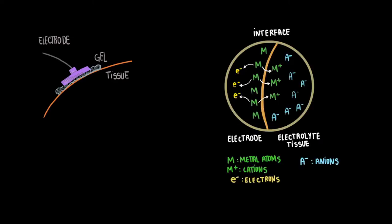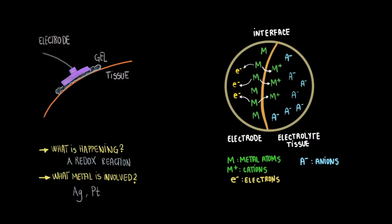Looking more closely into what is happening at the electrode-electrolyte tissue interface, you would see metal atoms crossing the interface to become cations and meet anions in the electrolyte solution. They do this while leaving behind electrons at the electrode. In essence, what is happening at the interface is a redox reaction.